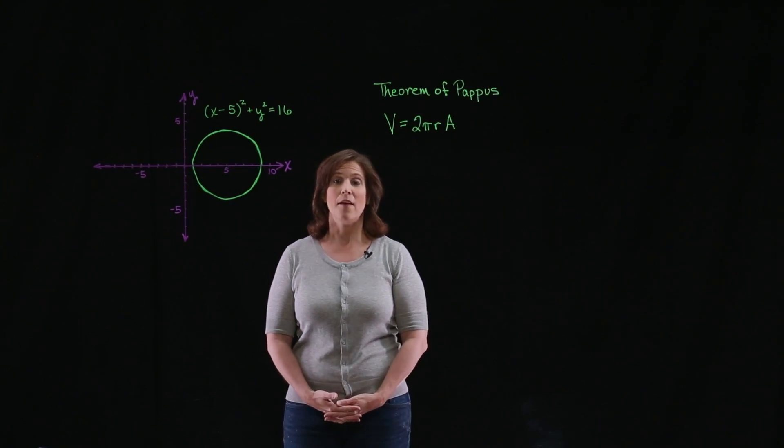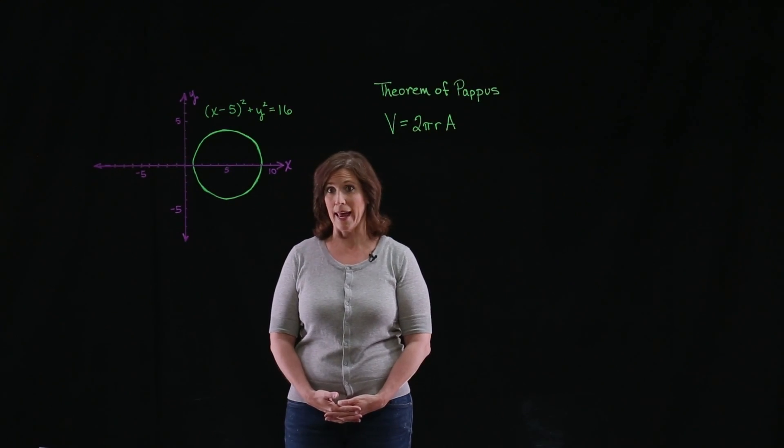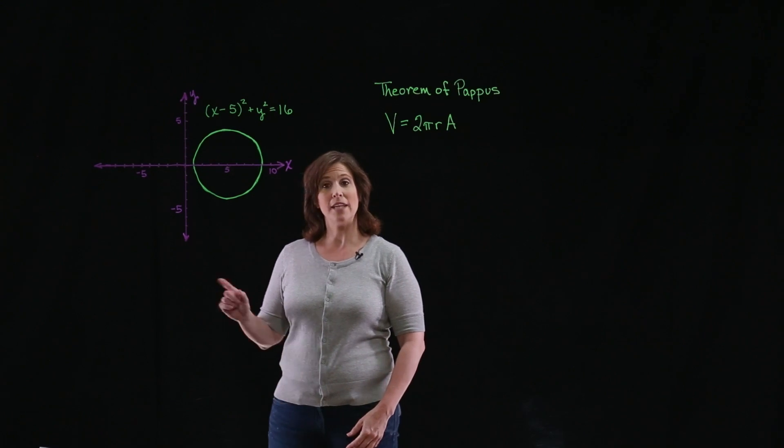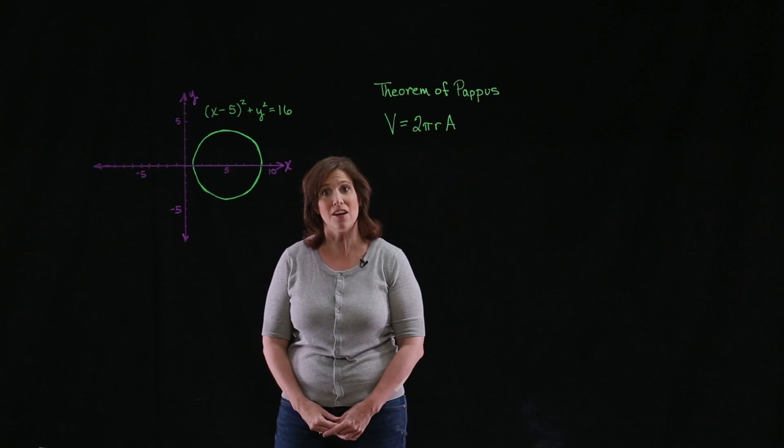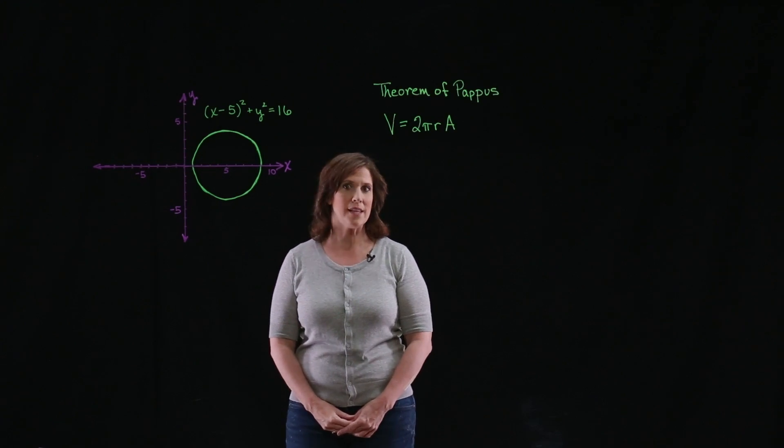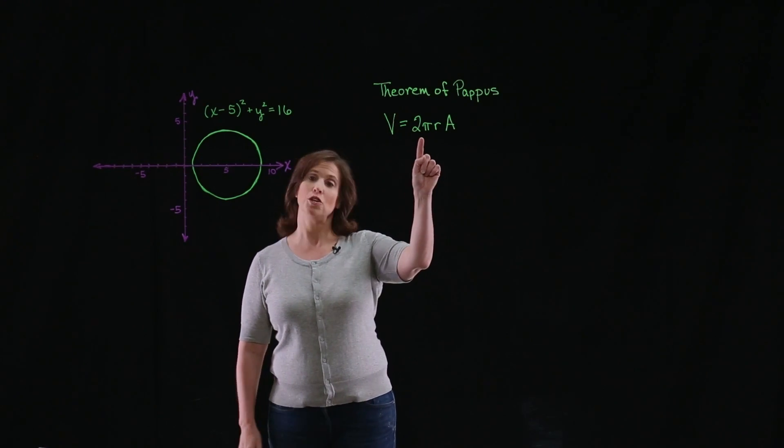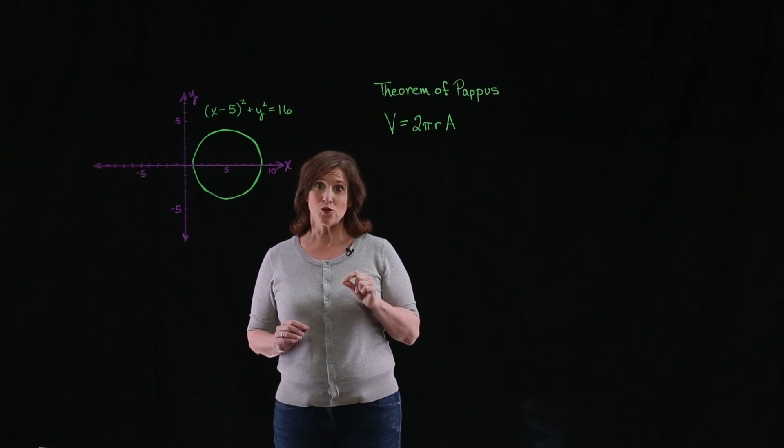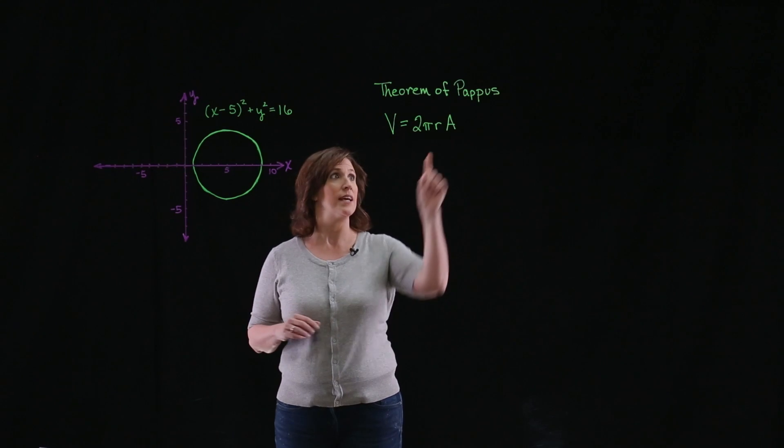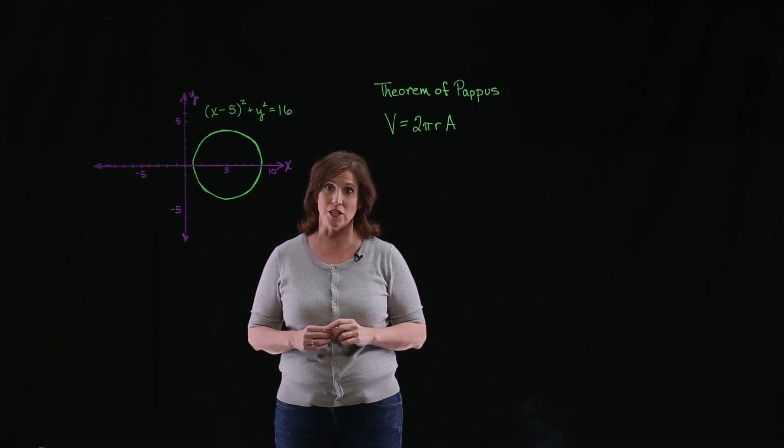In the theorem of Pappus, if we have a region that lies in a plane and an axis of rotation where the axis of rotation does not intersect the interior of the region, we can say that the volume is 2πR. R is the distance from the centroid to the axis of rotation times the area of the region.